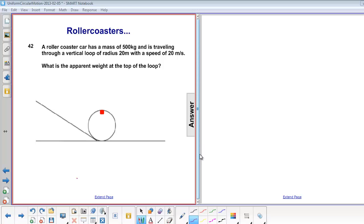A roller coaster car has a mass of 500 kilograms and is traveling through a vertical loop of radius 20 meters with a speed of 20 meters per second. What is the apparent weight at the top of the loop?